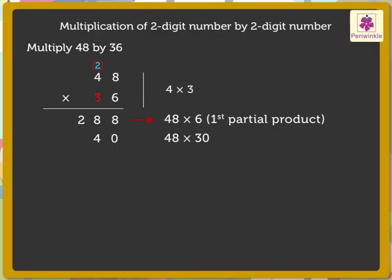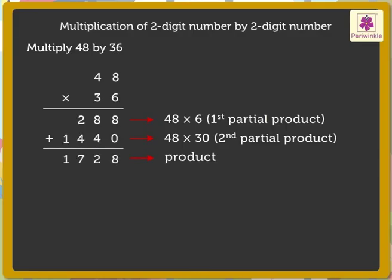After that, 4 into 3 is equal to 12, plus the carried over 2 is equal to 14, which we write in the answer column like this. So we get 1440 as the second partial product. Lastly, add both the partial products obtained, that is 288 plus 1440, to get the answer, which is equal to 1728.